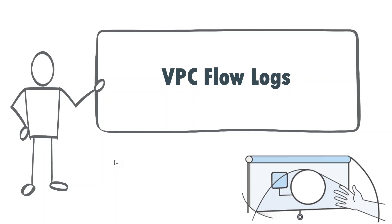VPC flow logs is a very interesting topic. If you are ever troubleshooting what is going wrong inside your VPC, if you see malicious traffic inside your VPC, if you are on-premises and not able to connect to your AWS VPCs, or if there is a lot of latency between two resources in your VPC — VPC flow logs is your friend.